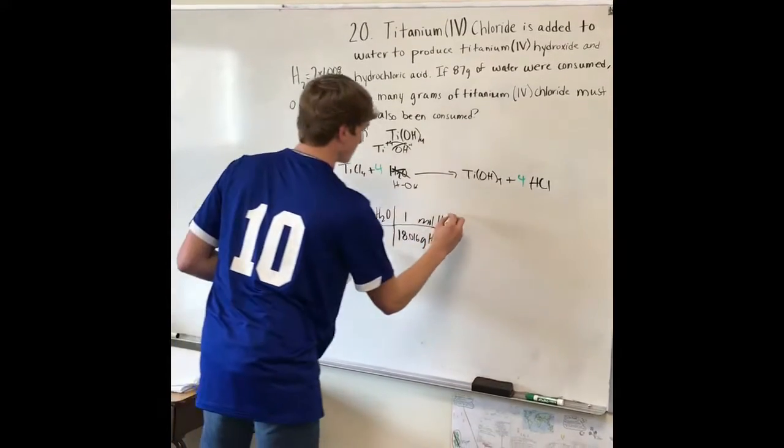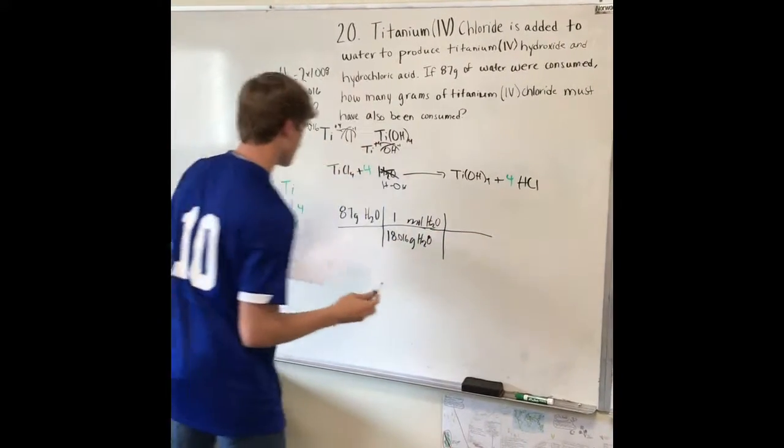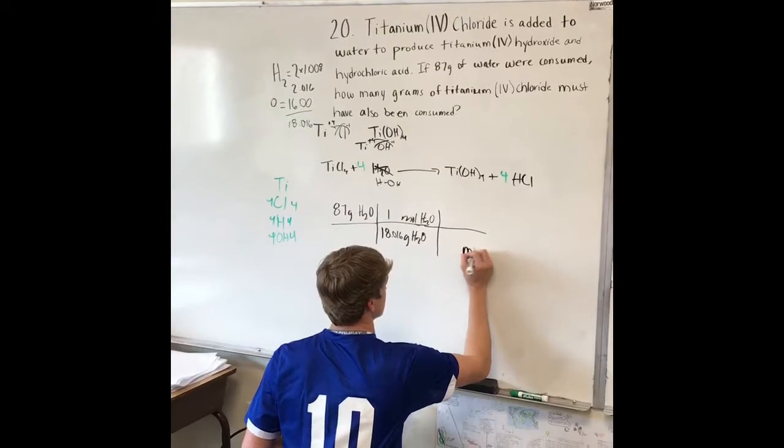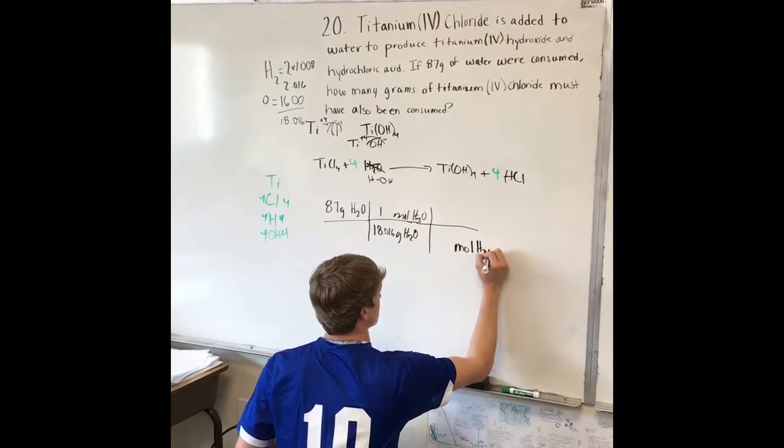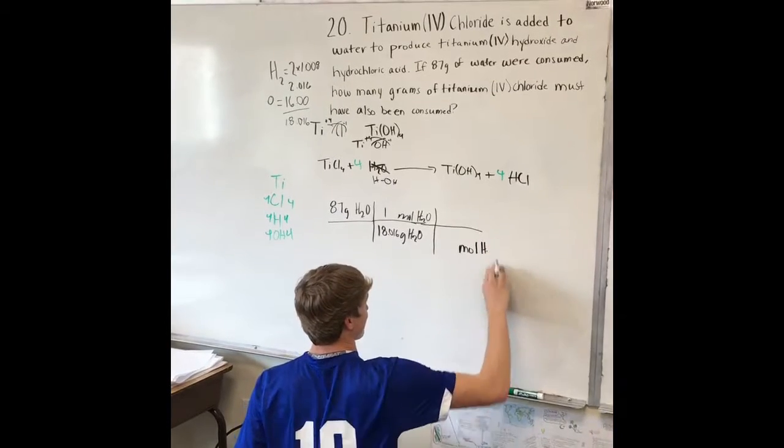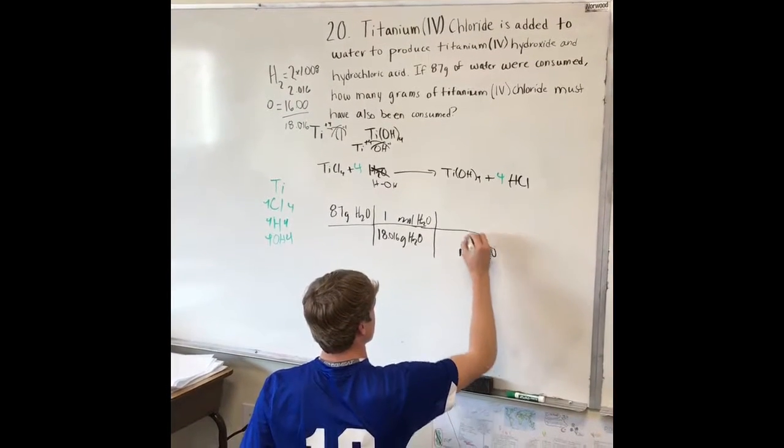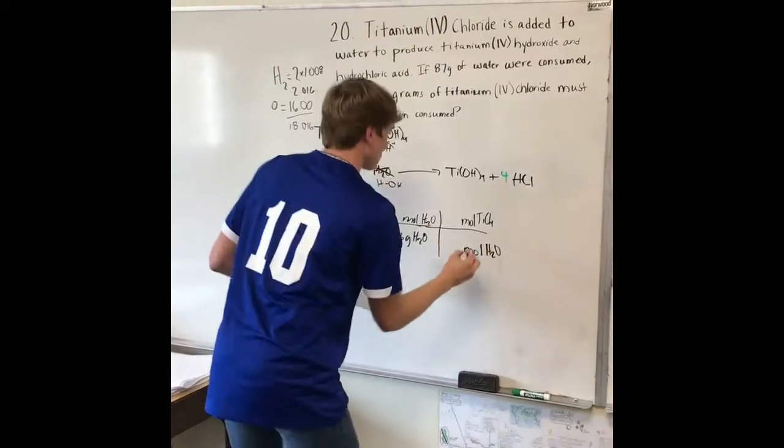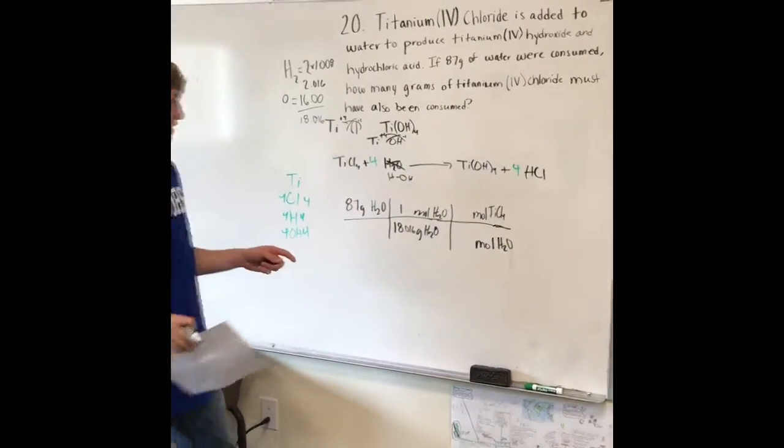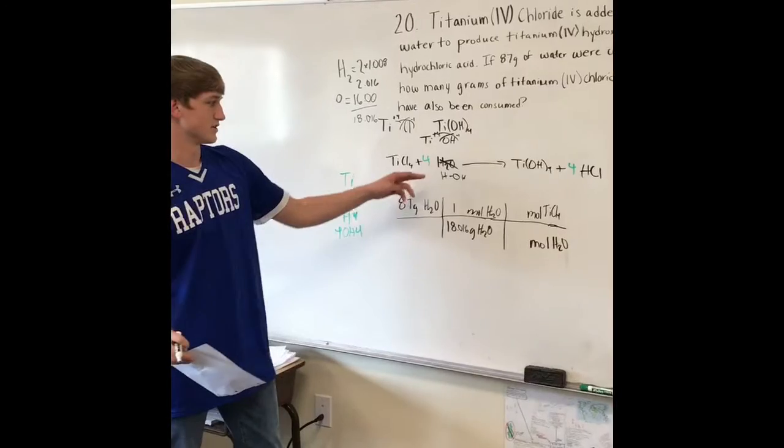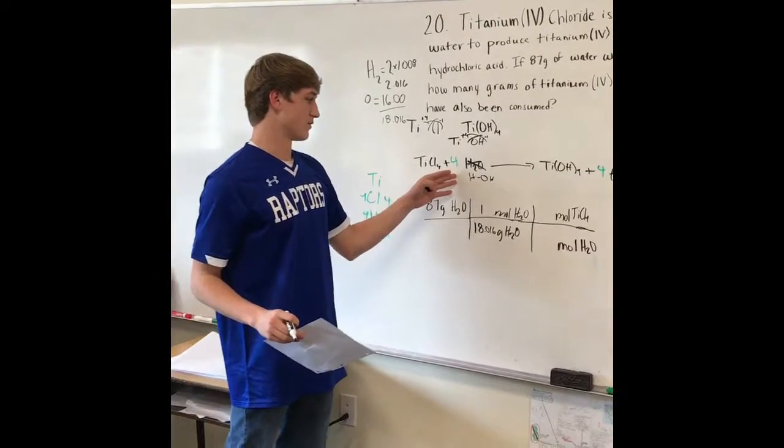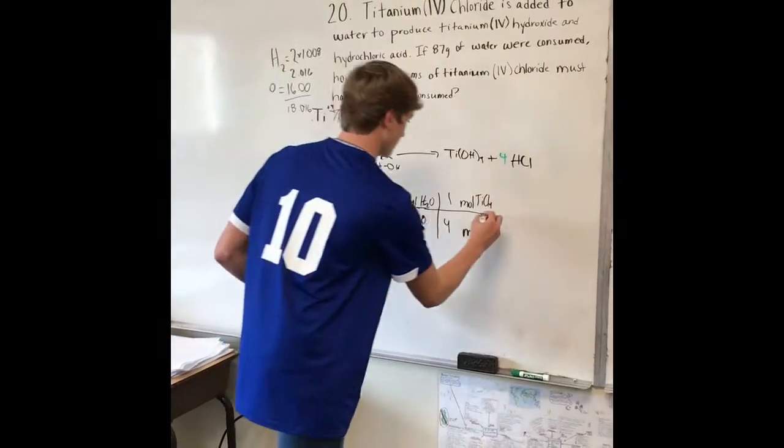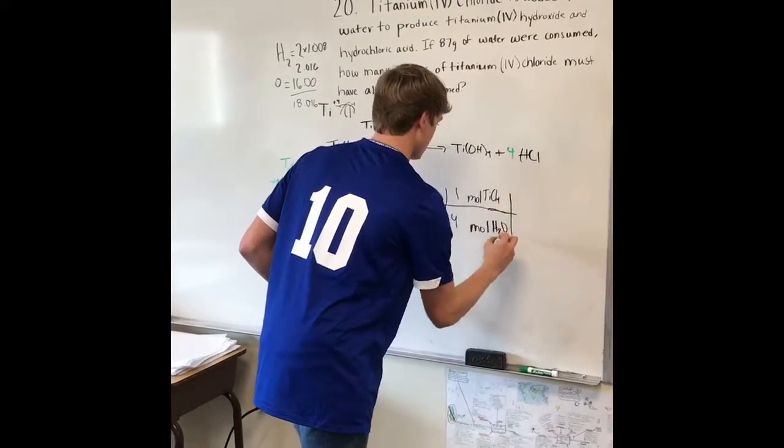Convert from grams to moles of H2O, then convert to moles of titanium chloride. The mole ratio comes from the balanced equation: in order to have four moles of water, you need one mole of titanium chloride. So the ratio is one to four.